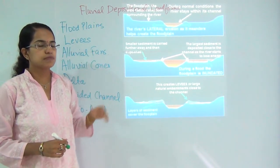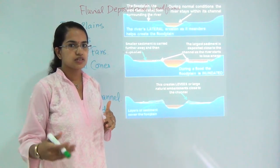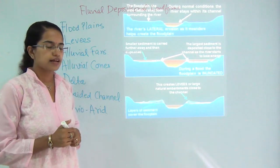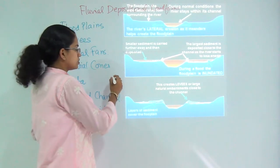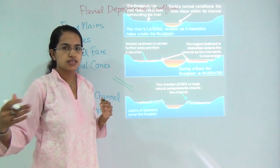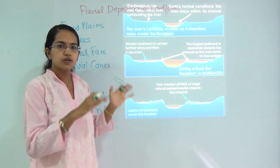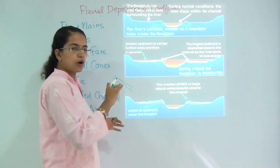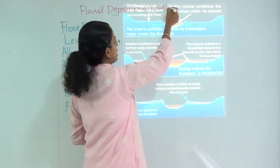Today we will be talking about fluvial depositional landforms — the various depositional features formed by running rivers. In the previous class we talked about erosional landforms. Depositional landforms usually take place in the lower course of the river, where deposition predominates over transportation and erosion. All the sediments eroded and transported in the upper and middle course tend to settle and accumulate in the lower course.